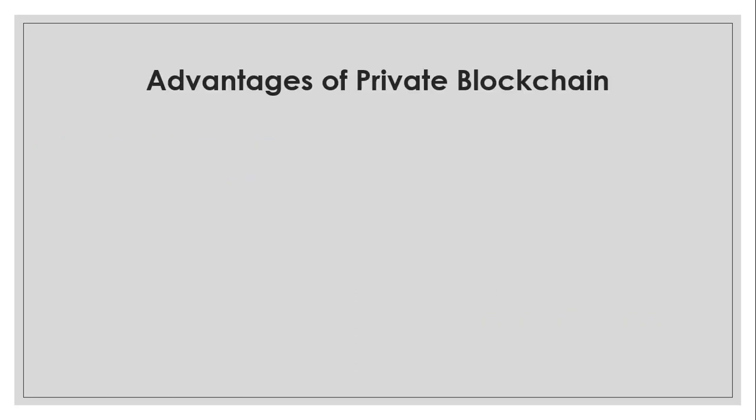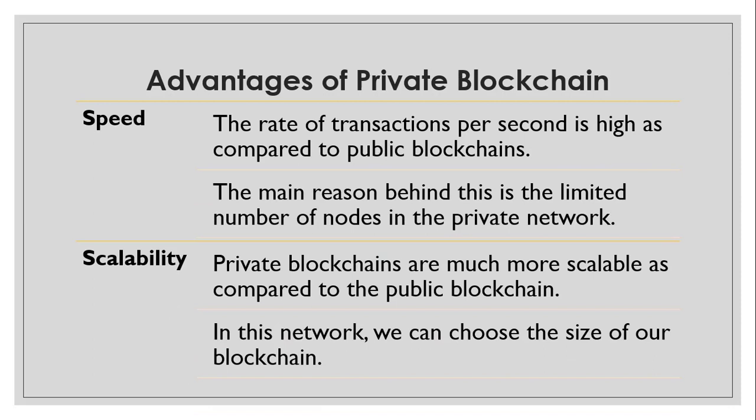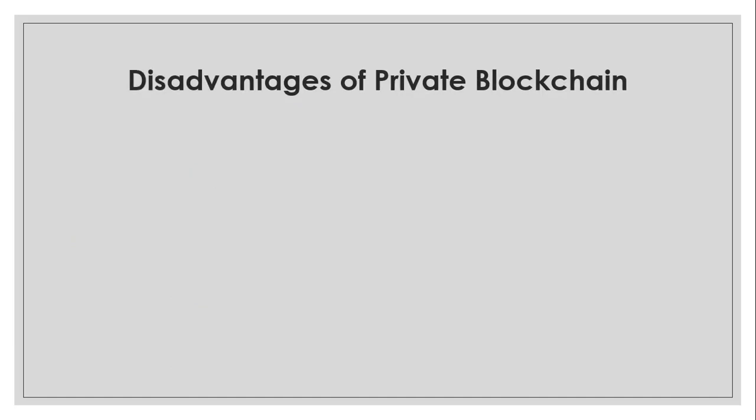The first advantage of private blockchain is its speed. The network size is small, so the rate of transactions per second is high compared to public blockchain, due to the limited number of nodes. The second advantage is scalability — private blockchains are much more scalable. For example, if a group of 10 people started a private blockchain and want to scale it up to 50 people, they can easily do so.